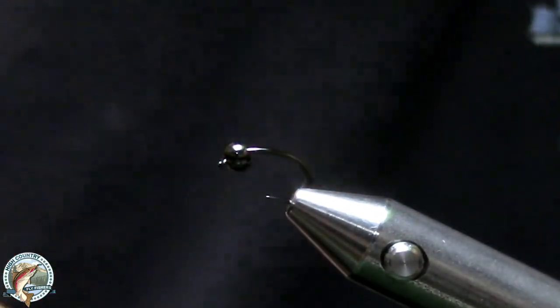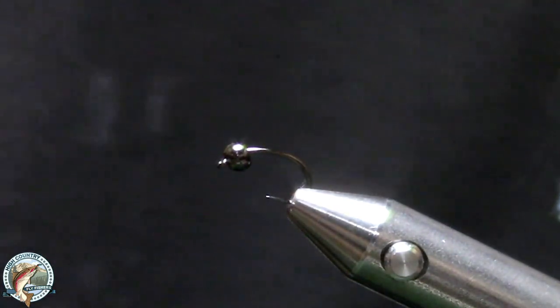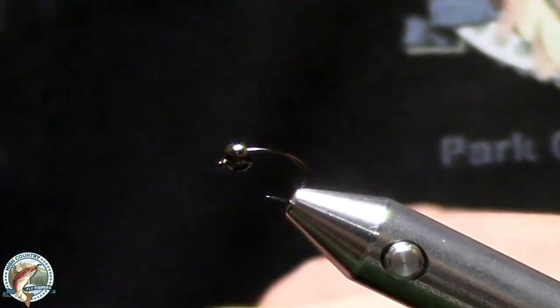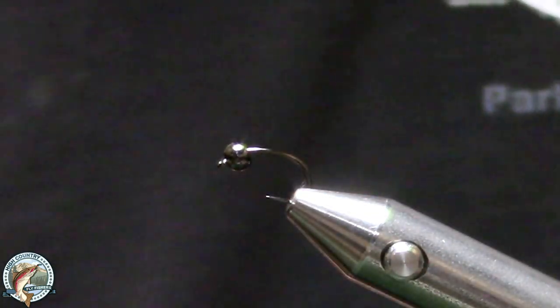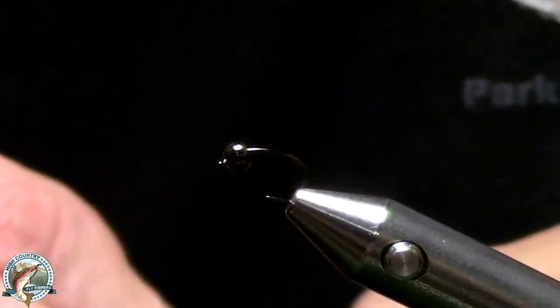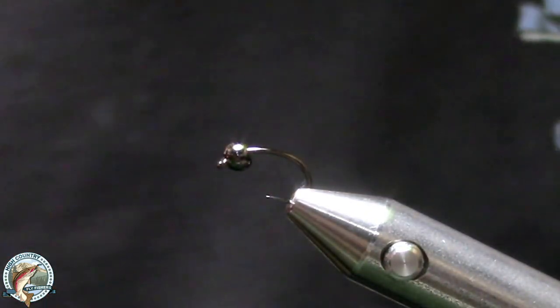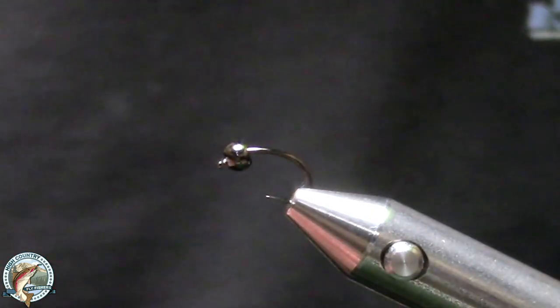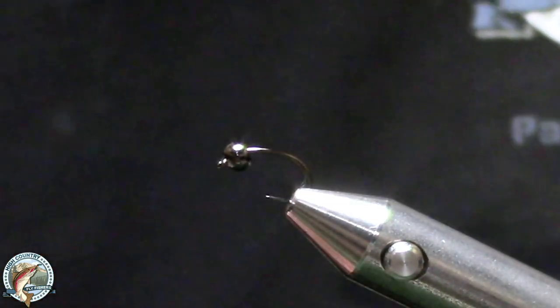The reason this is an important fly to tie is because it teaches you thread control. Everybody probably learned last week that thread is braided, so the longer I wrap with it, the more I rope it up. If I counterclockwise spin my bobbin it goes flat again. On this fly we're going to try to keep our thread as flat as we can.